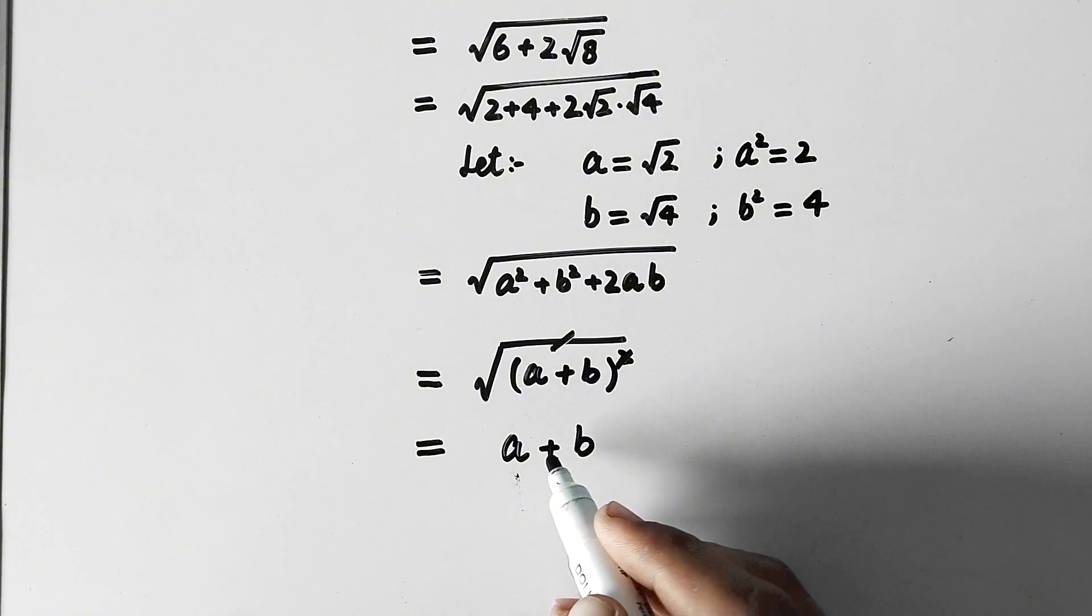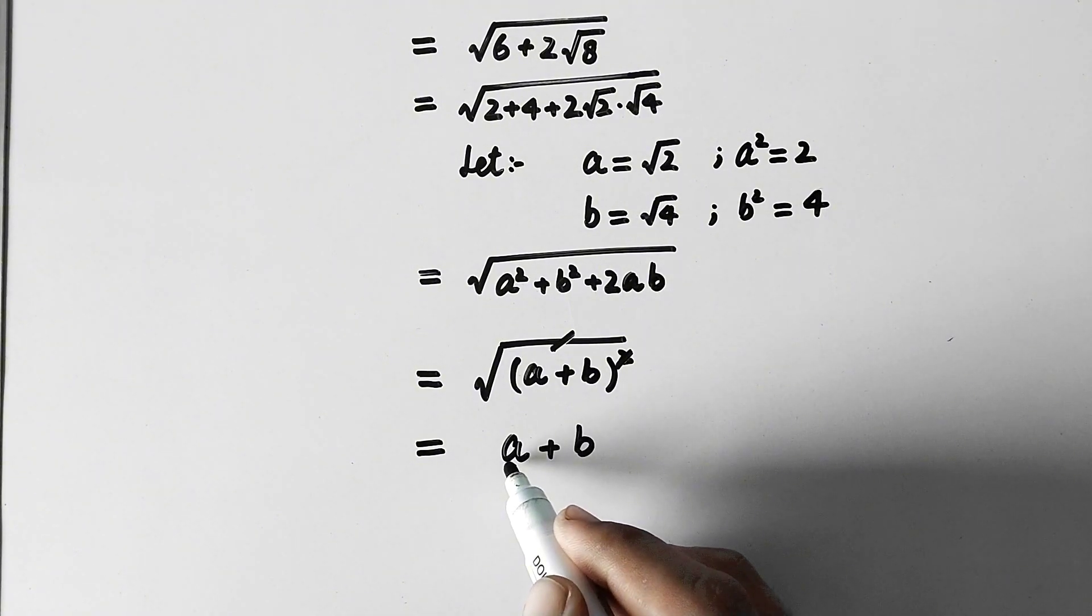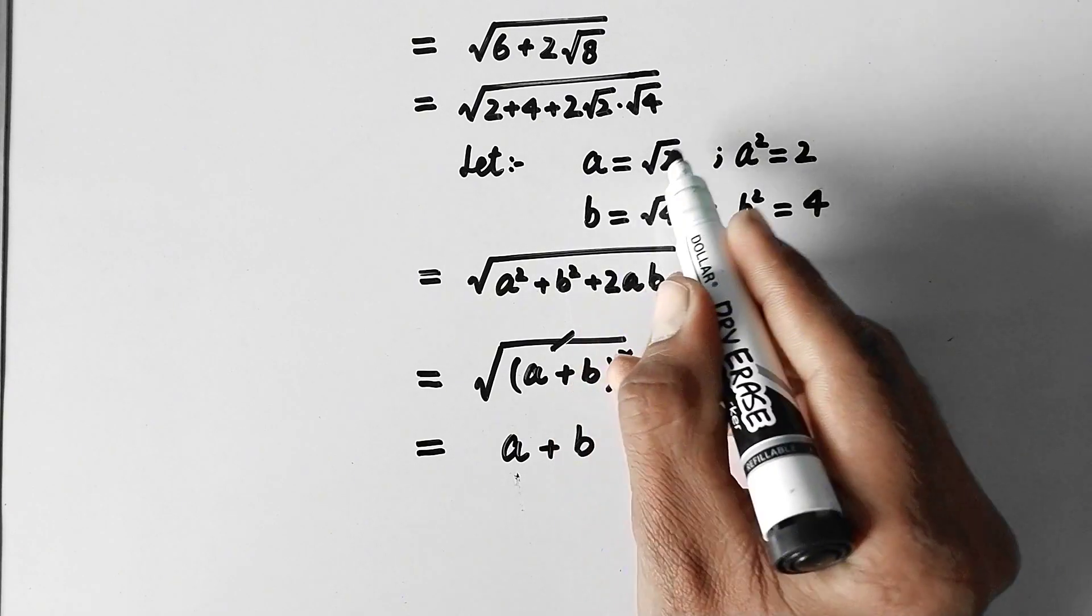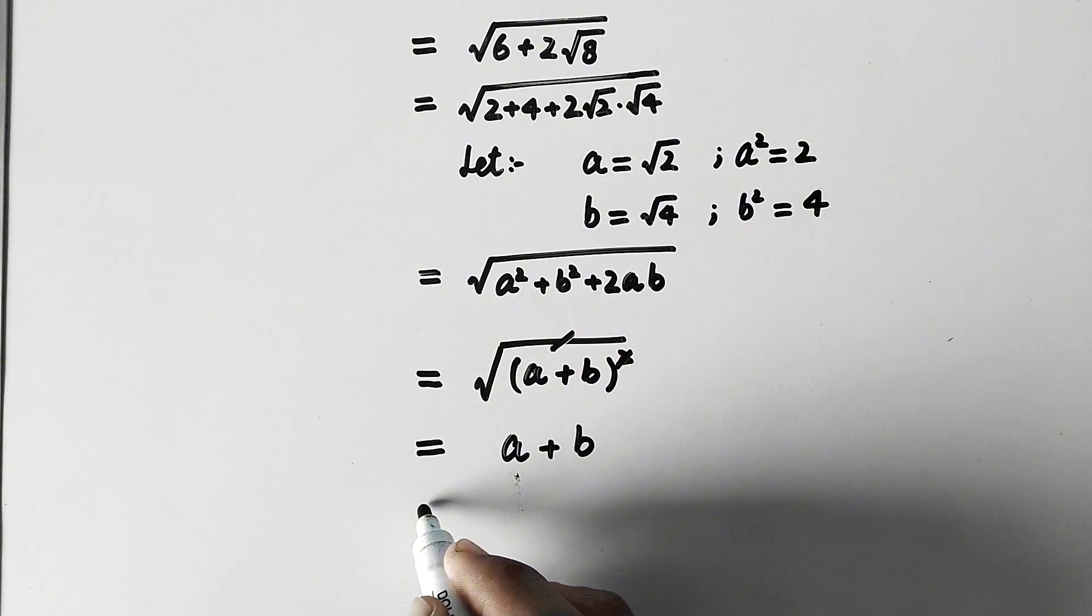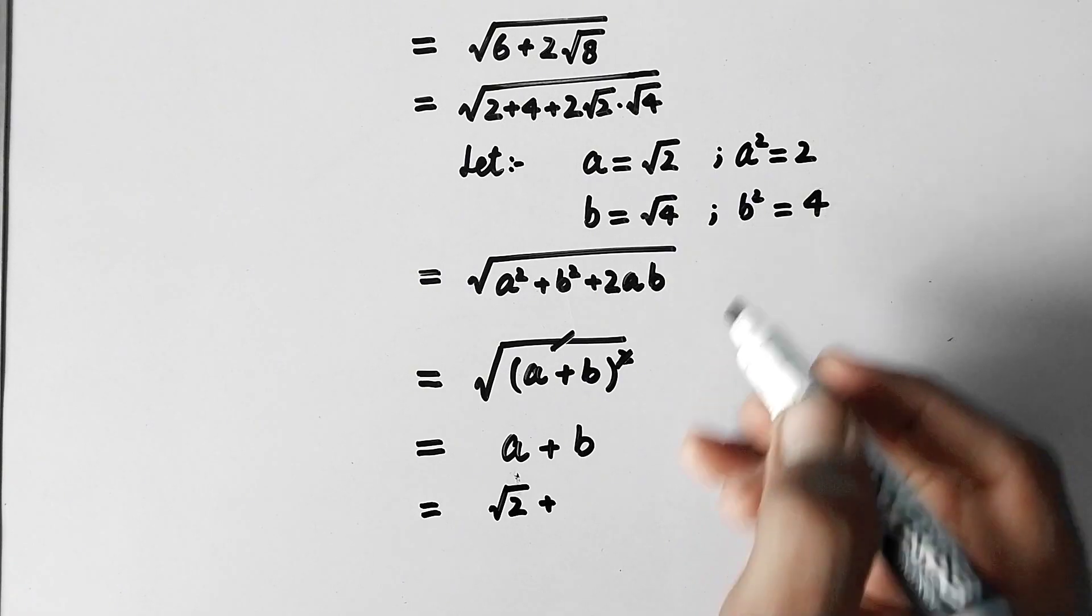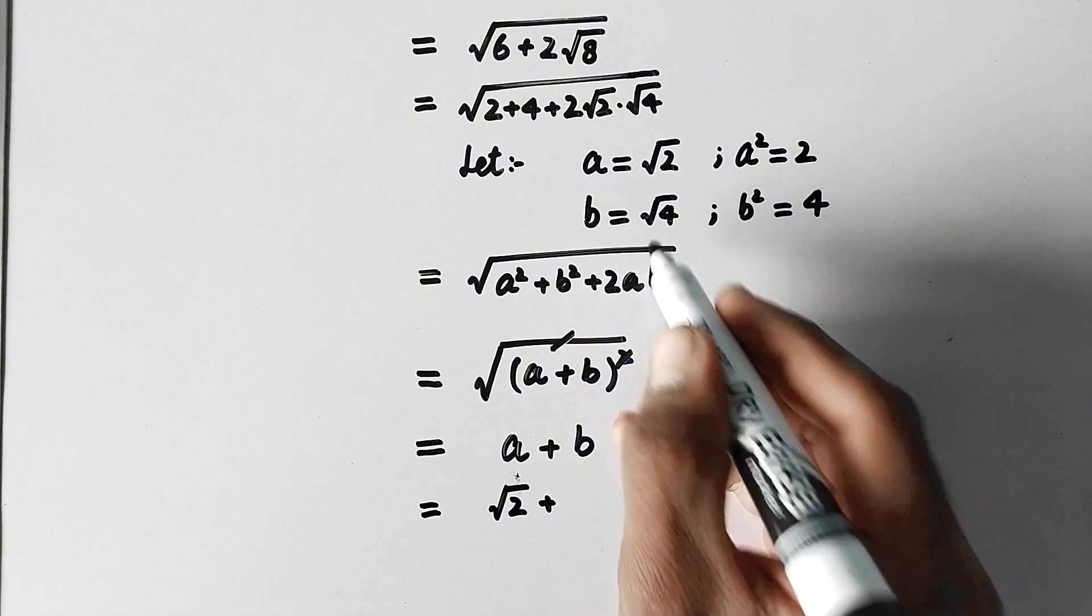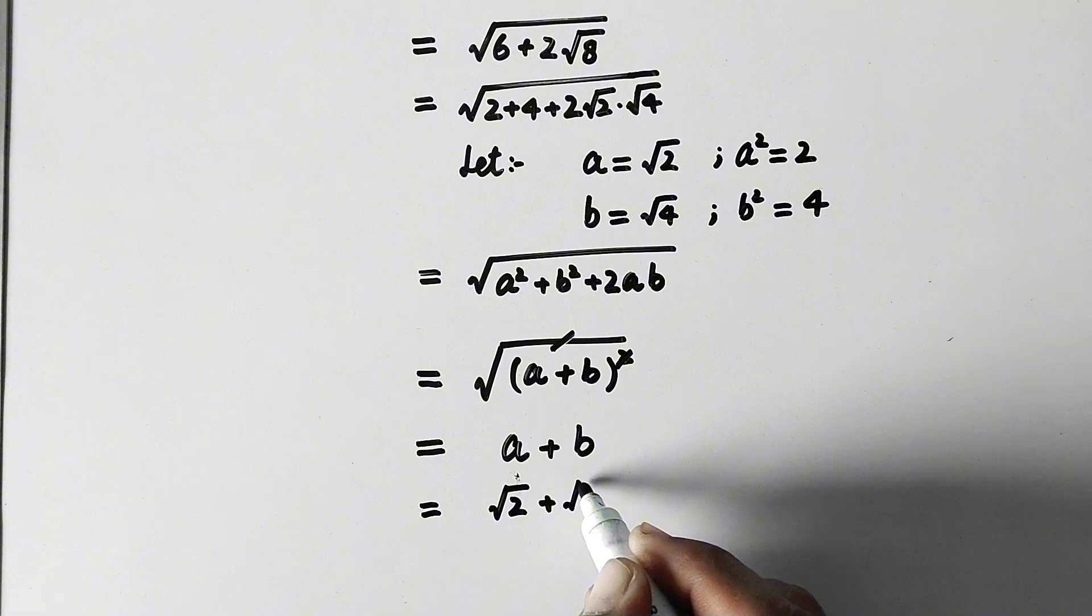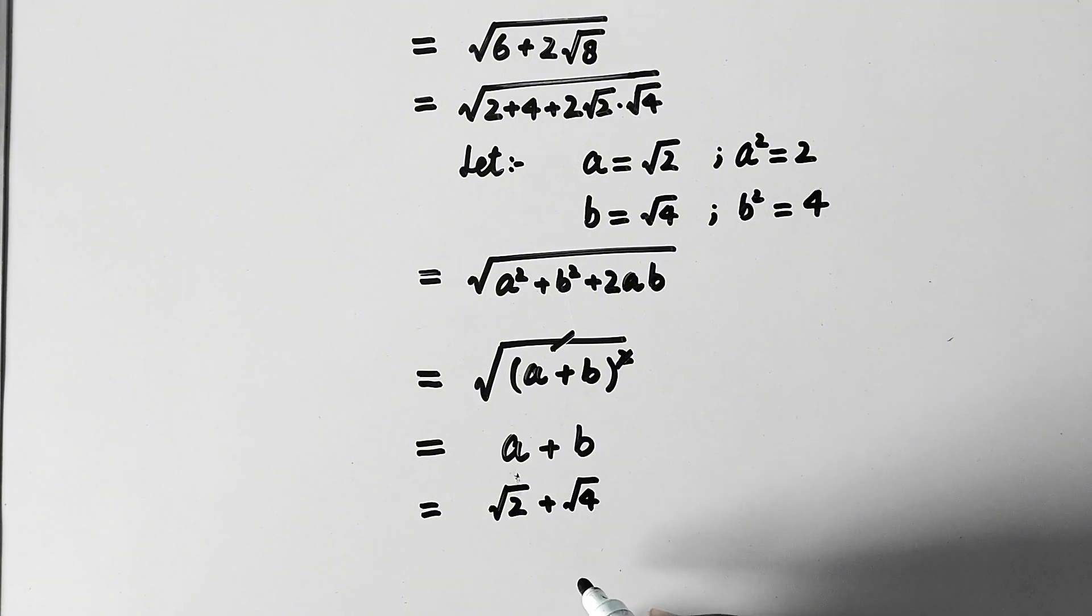And now we will recall that we have assumed a = √2 plus b = √4.